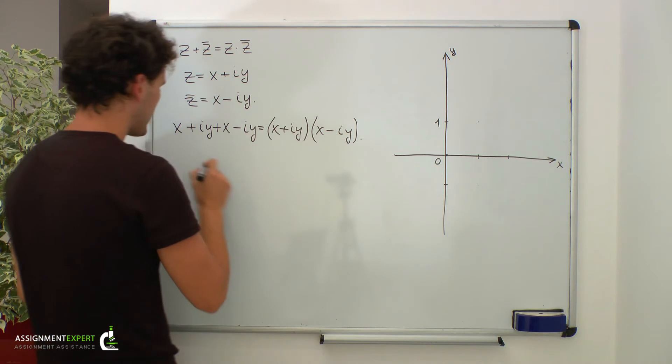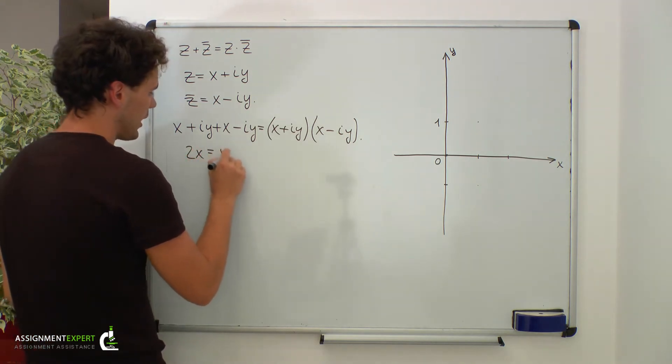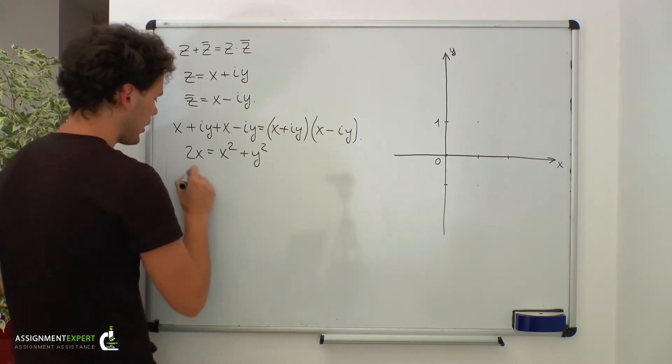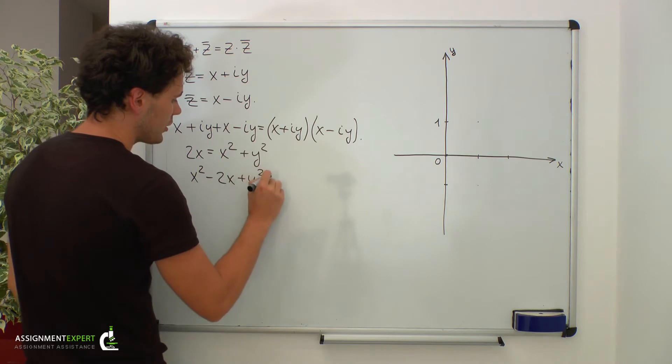Simplifying this expression, we get 2x equals x squared plus y squared. Now let's rewrite this in the following way: x squared minus 2x plus y squared equals 0.